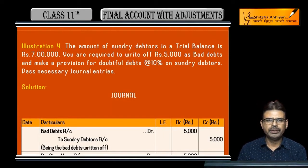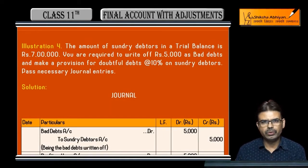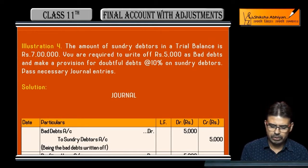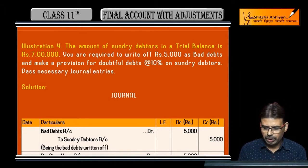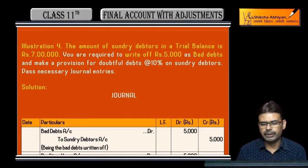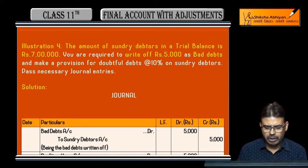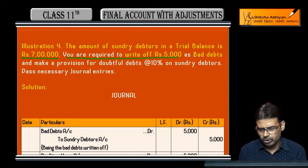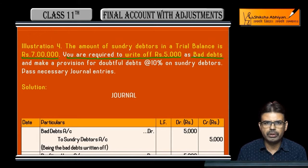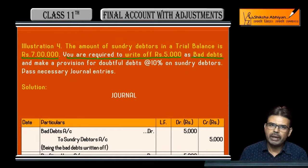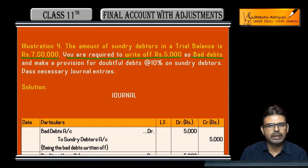The provision for doubtful debts is a special question. The amount of sundry debtors in the trial balance is given as 7,00,000. Write off 5,000 as bad debt. This means it is further bad debt — the entry is not yet passed. The formula is: bad debts (given in trial balance) + further bad debts + new provisions - old provisions.